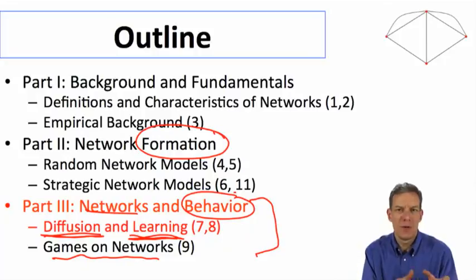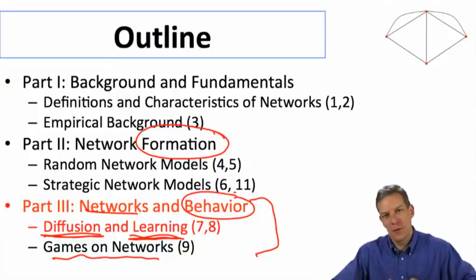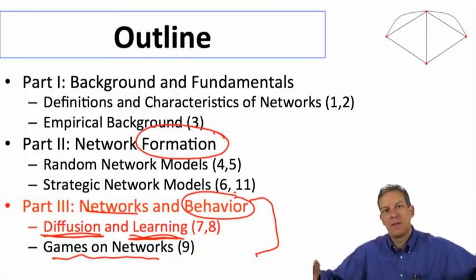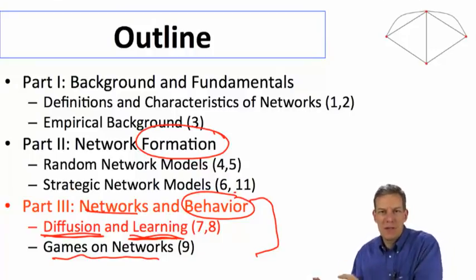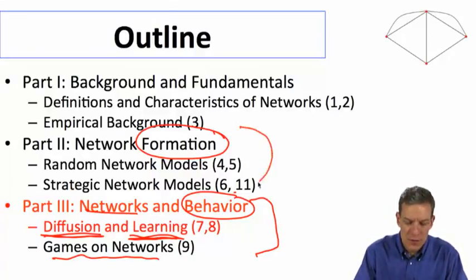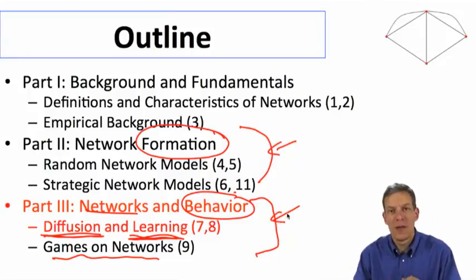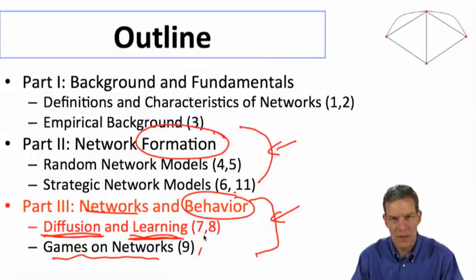Ultimately, to understand the formation process you would have to make predictions about what happens once the network forms. Before, we treated the utility function or the benefits coming from a network as a given. Now this will put some meat on that — so we know what will happen once the network's formed, giving payoffs to people. The co-determination has been looked at a little bit, and I'll say a bit about that at the end of the course.